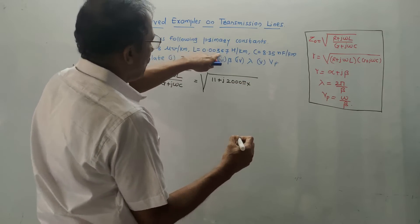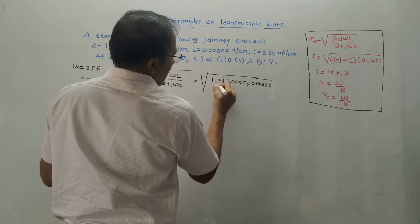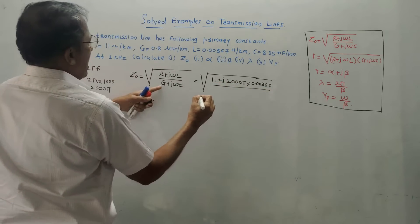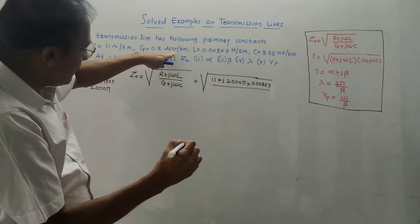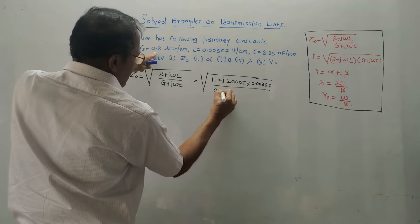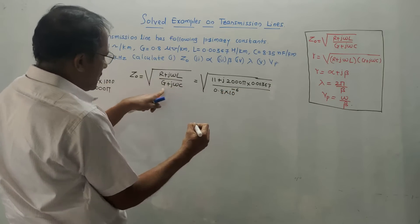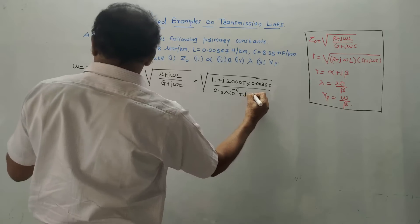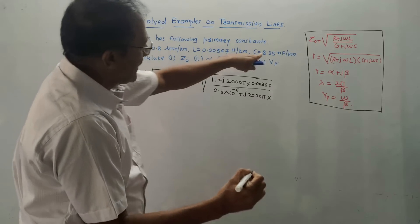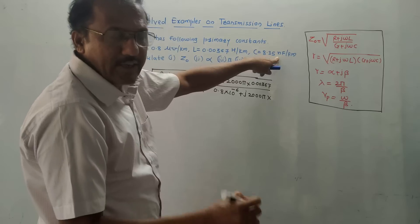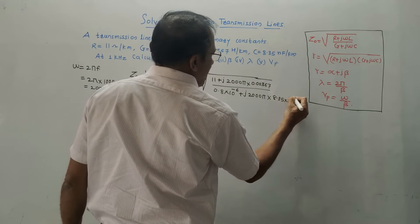L is the inductance value, which is 0.00367. Divided by G — the value of conductance is given as 0.8, but it is in micromhos. The basic unit is mhos, so it is 0.8 × 10⁻⁶. This is the value of G. Plus j·ω — the value of omega is 2000π — into C. The value of capacitance is in nanofarads per kilometer. 1 nanofarad = 10⁻⁹ farads, so it is 8.35 × 10⁻⁹.